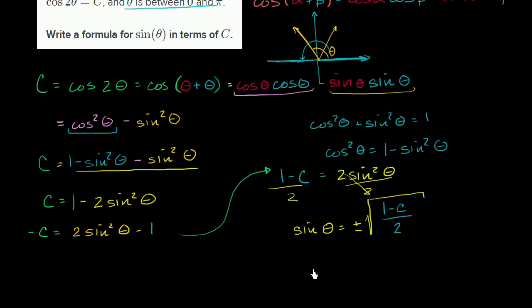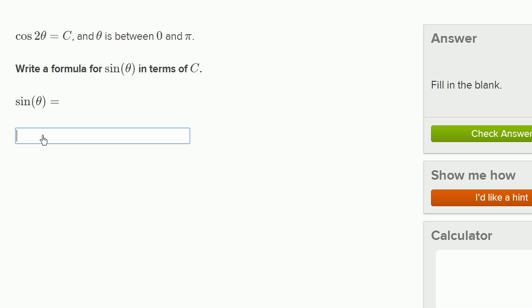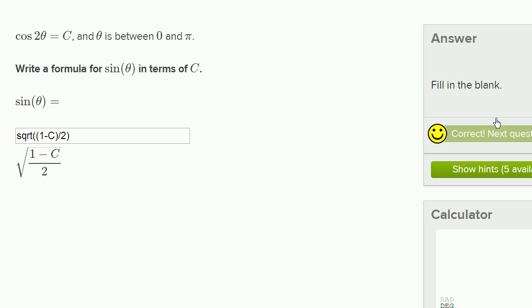So we would get sine of theta is equal to the principal root, or you could even think of it as the positive square root of 1 minus c over 2. So let's go back and check our answer. So sine of theta is equal to the square root of 1 minus capital c, all of that over 2. And we got it right.